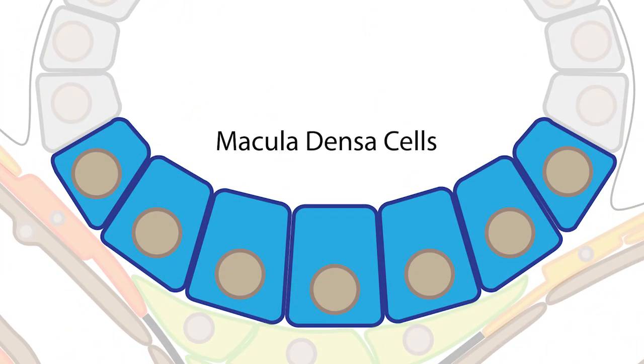And finally, the macula densa cells are specialized tubular epithelial cells that influence the regulation of glomerular filtration rate. The macula densa cells are technically not part of the glomerulus, but because they influence glomerular function, they are often referred to as the juxtaglomerular apparatus, or JGA.